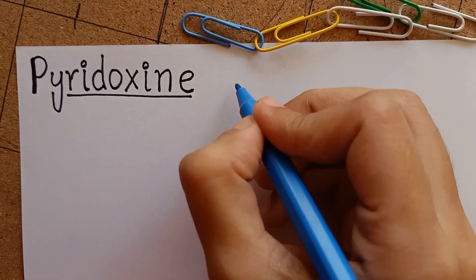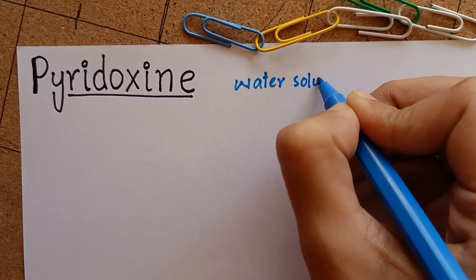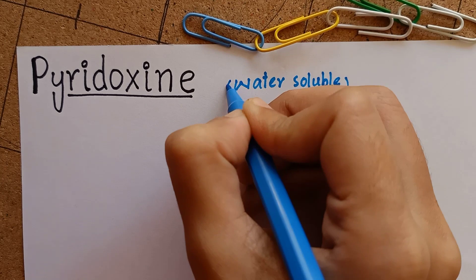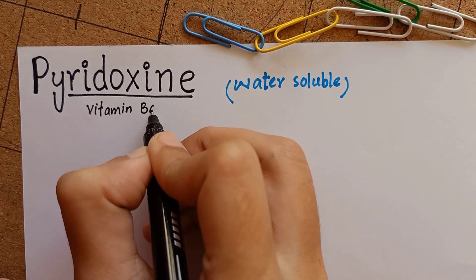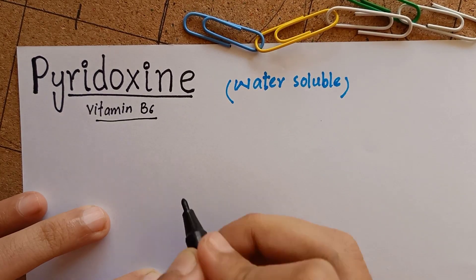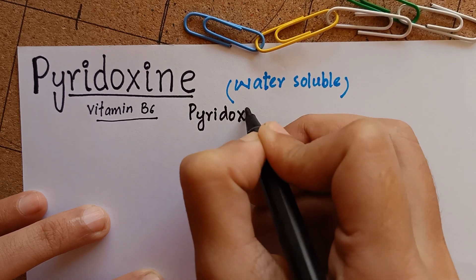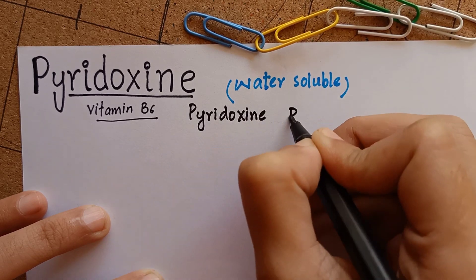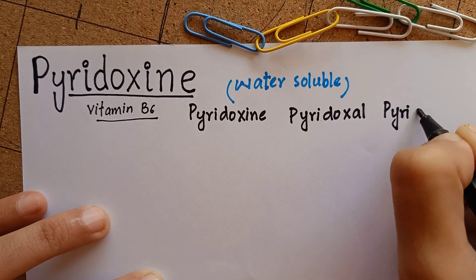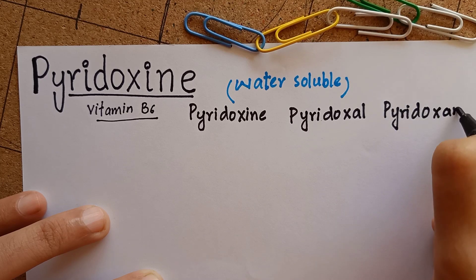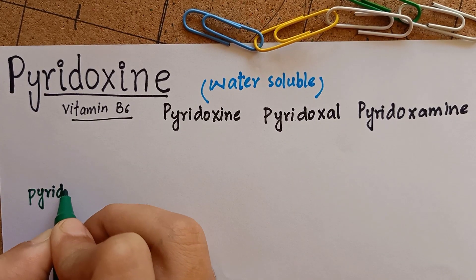We are going to learn about pyridoxine, which is a water-soluble vitamin. It is also called vitamin B6. Vitamin B6 is a collective term used for pyridoxine, pyridoxal, and pyridoxamine. All of these are the derivatives of pyridine.